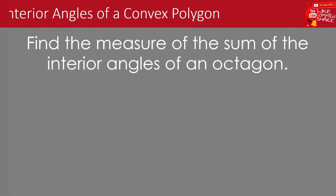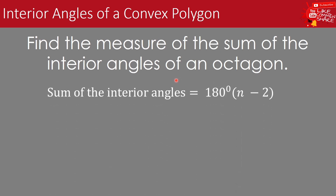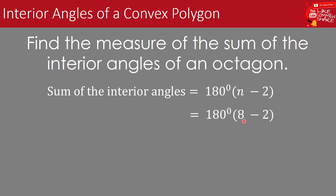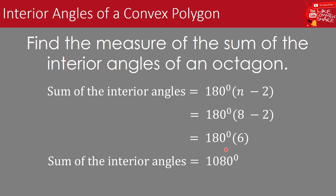Example: Find the measure of the sum of the interior angles of an octagon. We use the formula: sum of interior angles equals 180 degrees times the quantity of n minus 2, where n is the number of sides. Since an octagon has 8 sides, we substitute 8 for n: 180 degrees times the quantity of 8 minus 2. Simplifying using the GEMDAS rule: 8 minus 2 equals 6, and 180 degrees times 6 equals 1,080 degrees. Therefore, the sum of the interior angles of an octagon is 1,080 degrees.